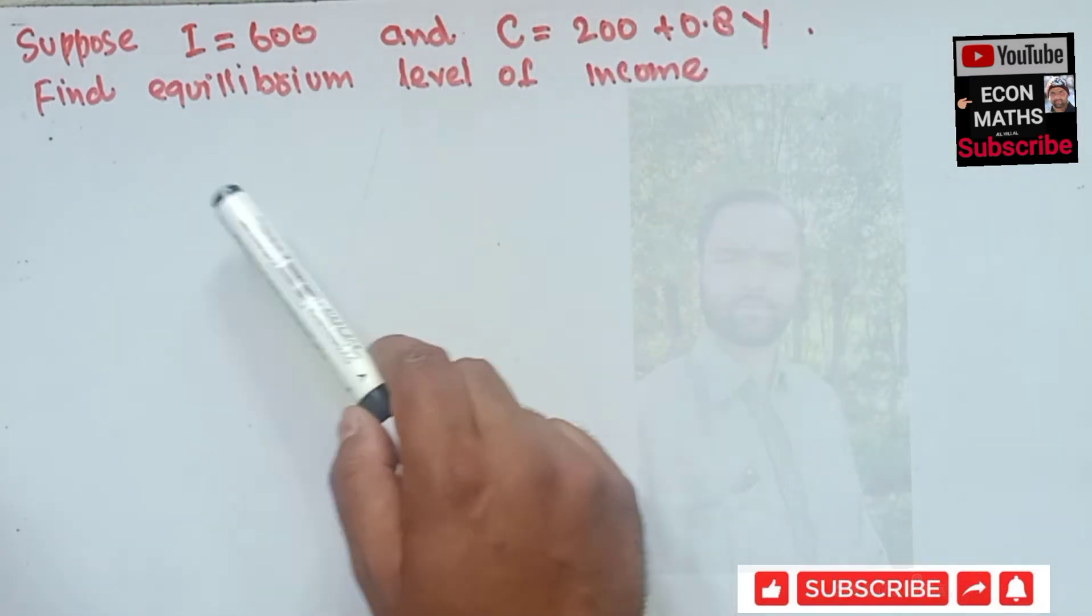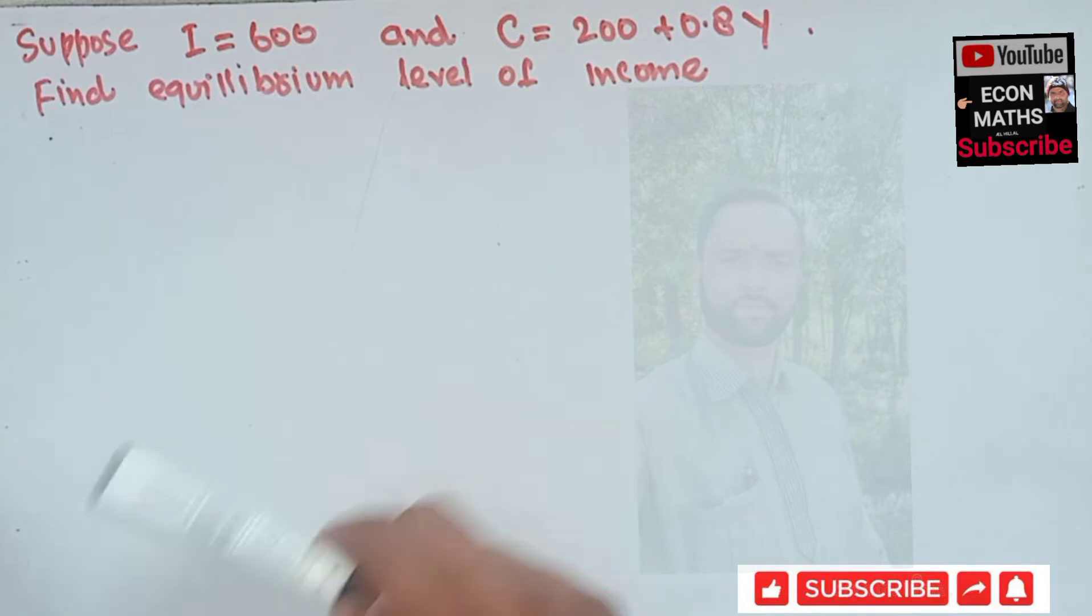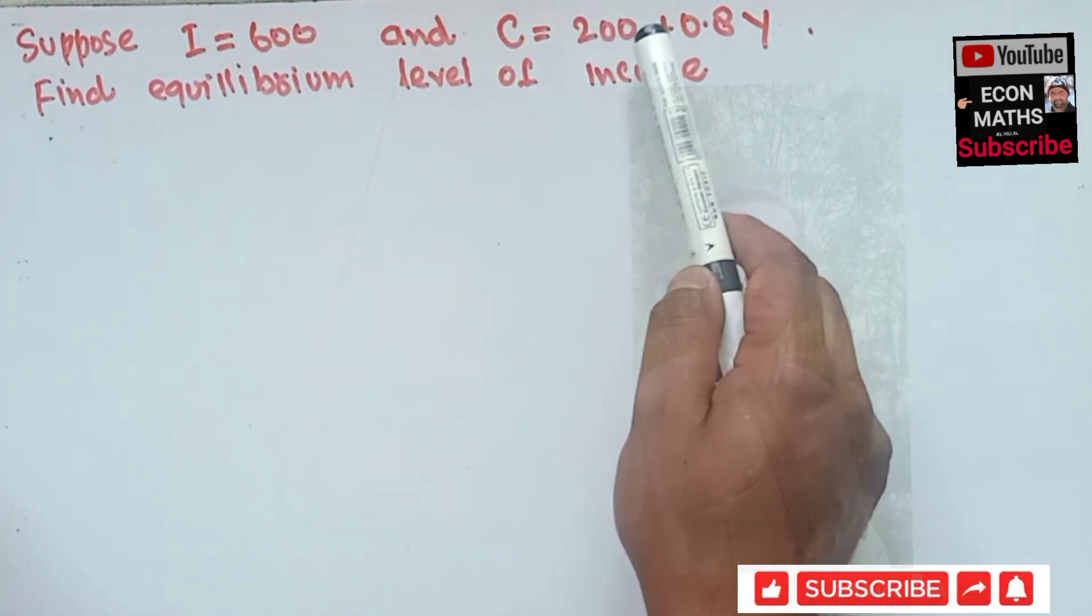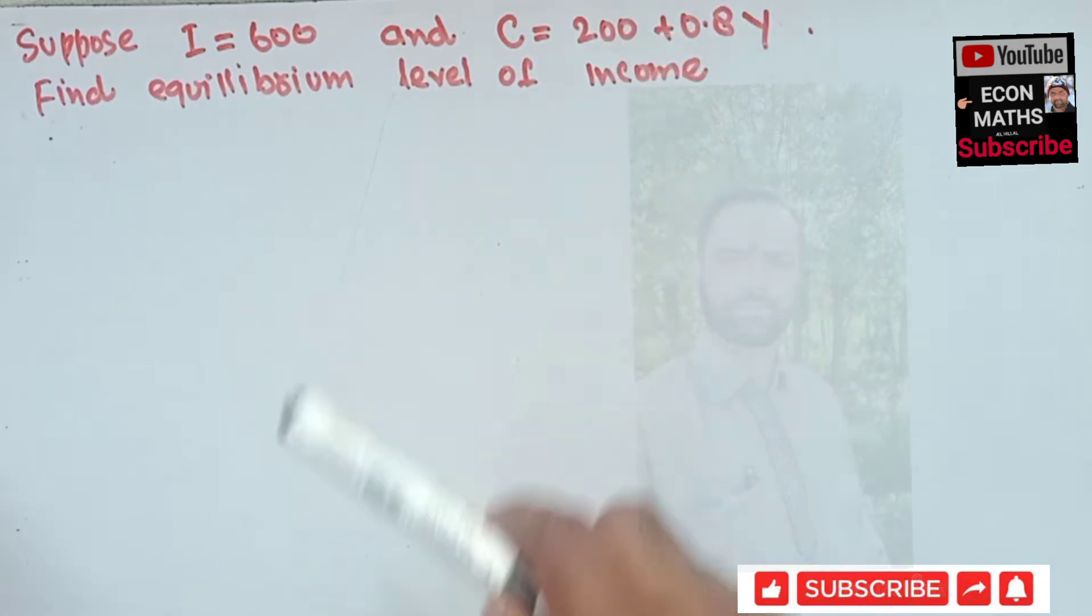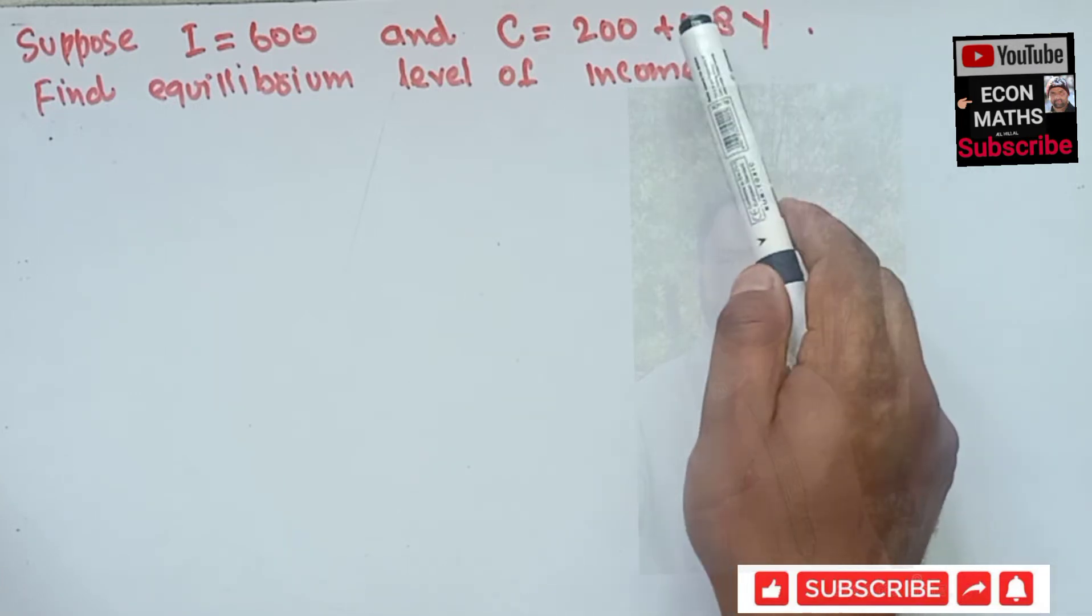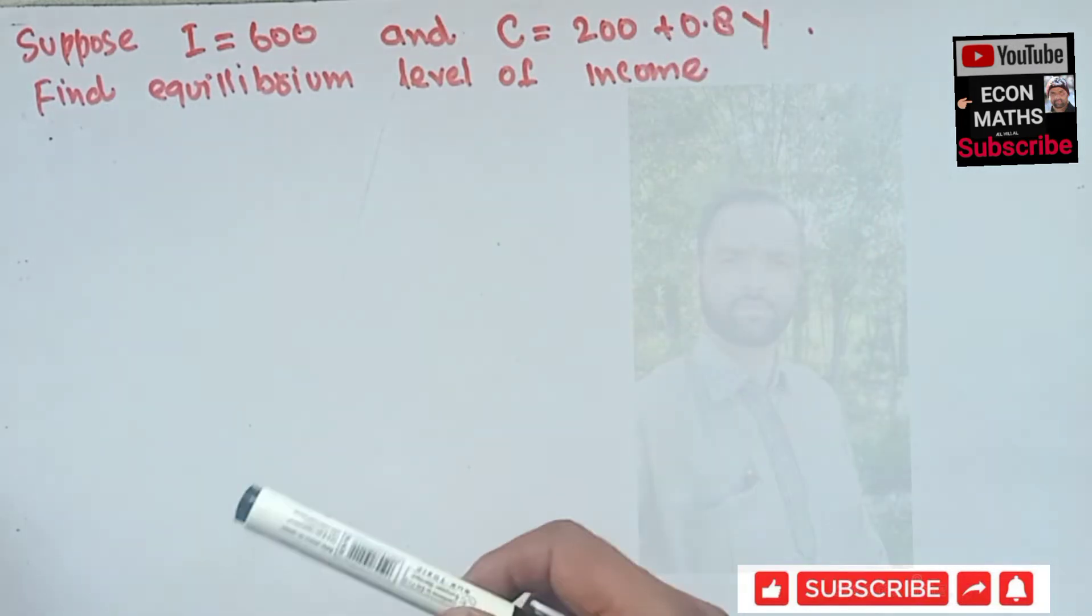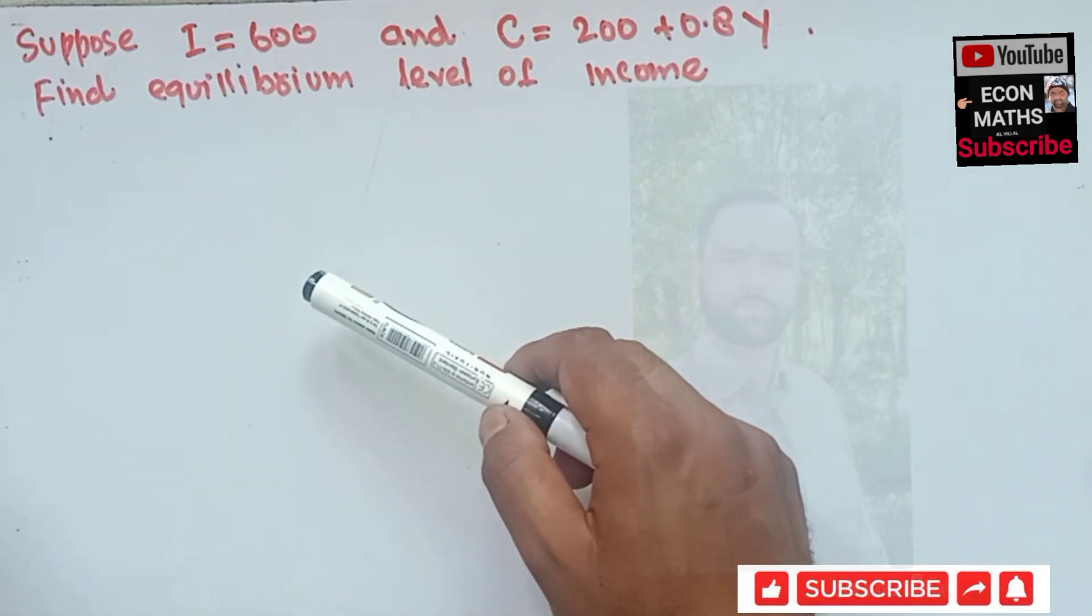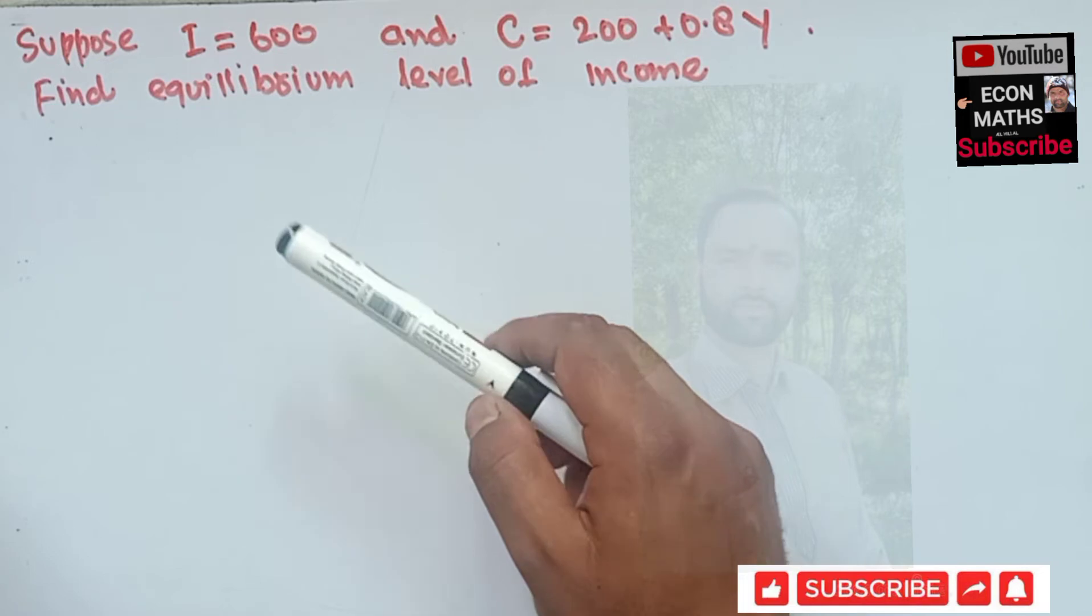This C is the consumption. This 200 shows the autonomous consumption which doesn't depend upon the level of income, so we have to consume when our income is zero. And this 0.8 is simply the marginal propensity to consume, and Y is the income.